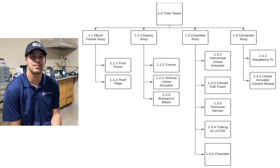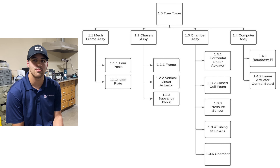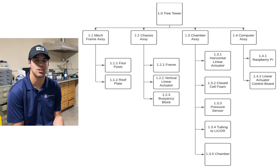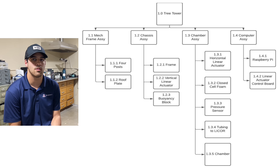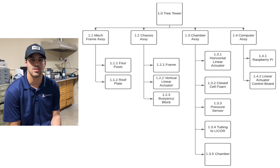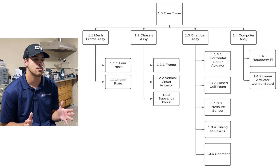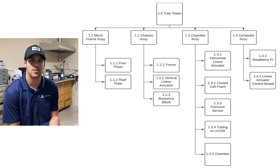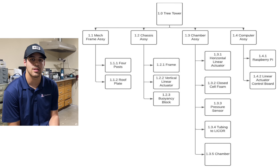Our system comprises four sub-assemblies. The first sub-assembly is the mechanical frame assembly, which consists of four aluminum posts that prevent translation in the X and Y direction and only allow for vertical movement. Our next sub-assembly is the chassis assembly, which will ride up and down the vertical four aluminum posts. Then we have the chamber assembly, which is our main assembly, consisting of a horizontal linear actuator, closed cell foam, and a pressure sensor that will give readings when pushing against the tree and transporting gas back to the LICOR. And then we have the computer assembly, which consists of a Raspberry Pi and a linear actuator control board.